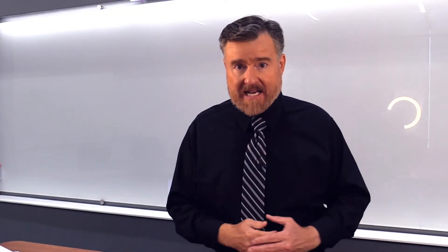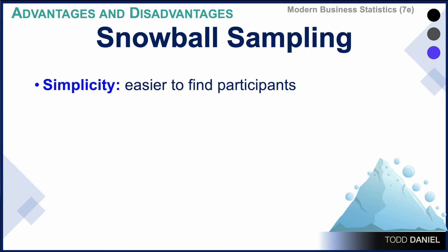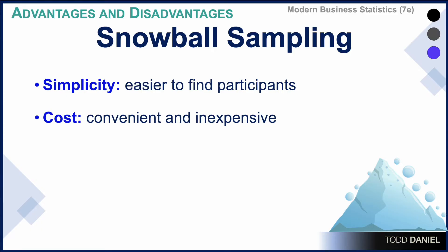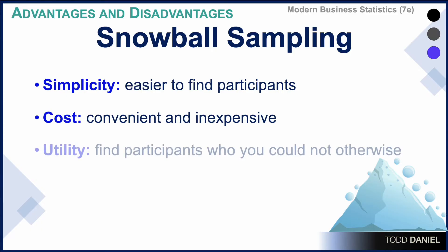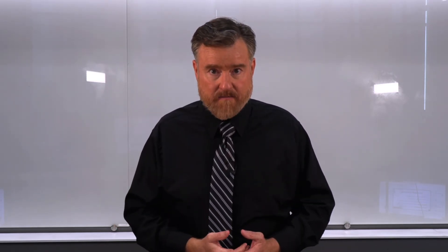There are advantages and disadvantages to snowball sampling. The primary advantage is simplicity — it will be much easier for you to find participants using the snowball sampling technique. It is also convenient, cost effective, and inexpensive. And in terms of utility, you can find participants who you might not otherwise be able to reach. But there are disadvantages as well. A primary one is sampling error: referrals tend to be more similar to the referrer than to others, giving you a sample that is less generalizable than it might otherwise be.